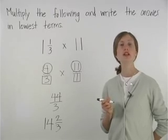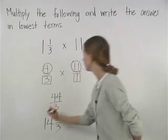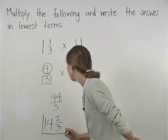So we have 14 and 2/3, which is in lowest terms, so it's our final answer. So 1 and 1/3 times 11 is 14 and 2/3.